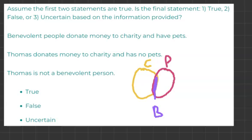The second statement says Thomas donates money to charity and has no pets. So where would he fit on the graph? He would fit in the C section for charity. And then it says Thomas is not a benevolent person.